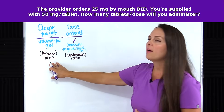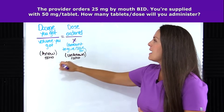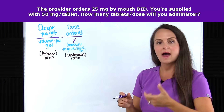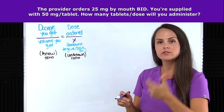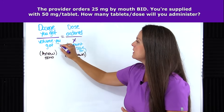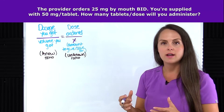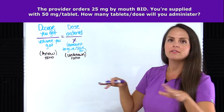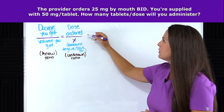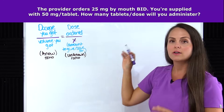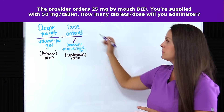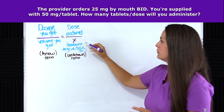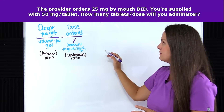For your known ratio, you put your dosage you have on hand — that's the dosage you're supplied with — over the volume that you have on hand. That should be equal to the dose ordered, which is the dose that the provider has ordered. You put that number there, and that's going to be over x. This is what you're solving for — it should be the amount to give.